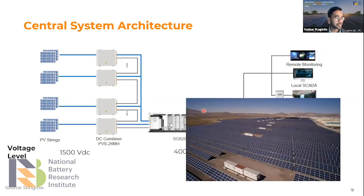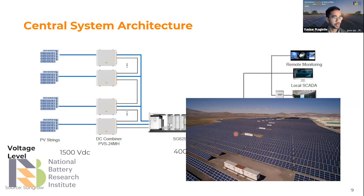Here is an example of a solar plant with a central system — you can see there are no small string inverters; instead there are big inverters placed together with the transformer station.